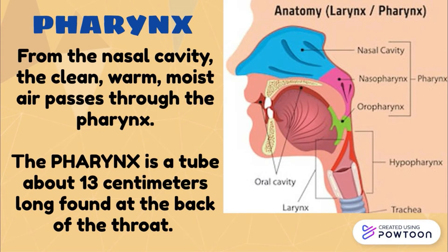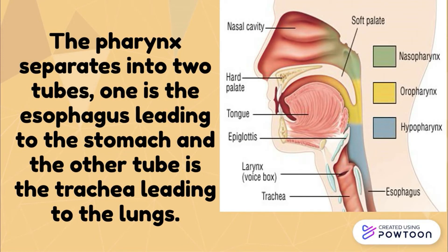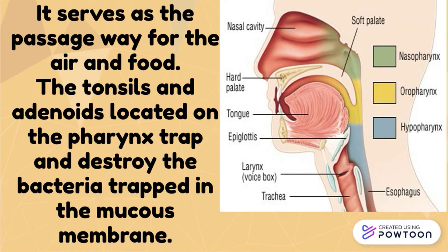Pharynx. From the nasal cavity, the clean, warm, moist air passes through the pharynx. The pharynx is a tube about 13 centimeters long found at the back of the throat. The pharynx separates into two tubes. One is the esophagus leading to the stomach and the other tube is the trachea leading to the lungs. It serves as the passageway for air and food. The tonsils and the adenoids located on the pharynx trap and destroy the bacteria trapped in the mucous membrane.